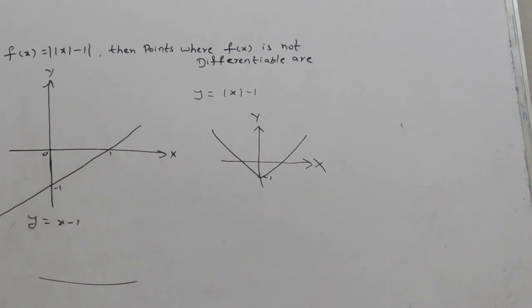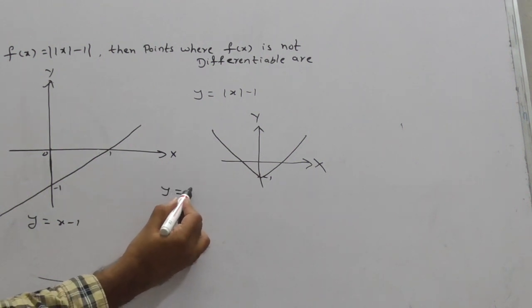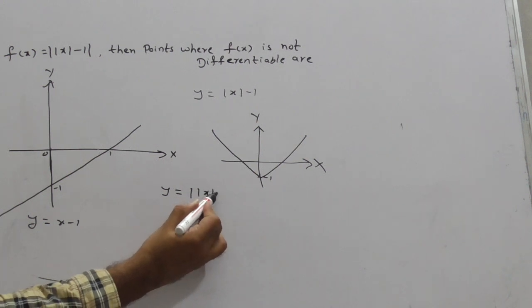What is this? This is y equals |x - 1|. Now finally, you have to draw y equals ||x| - 1|.